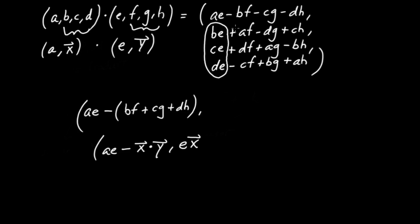Another collection of three terms I'm going to single out is this trio. Notice what's going on: I have A in all three terms, being multiplied by F, G, and H. Remember, (F, G, H) is that vector y. So I could summarize that trio as A times the vector y.